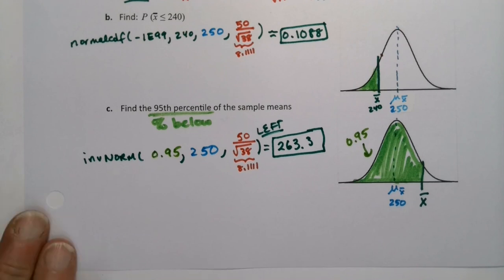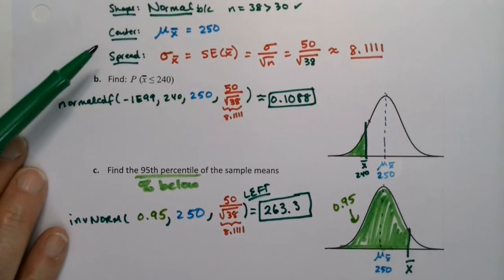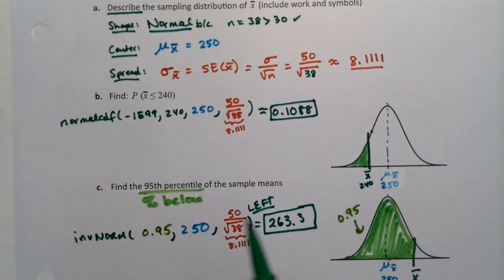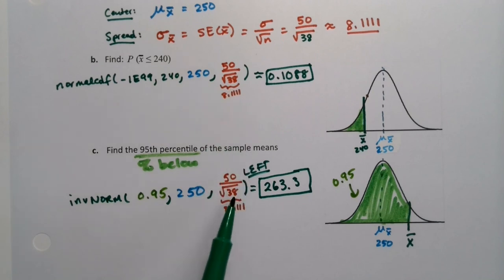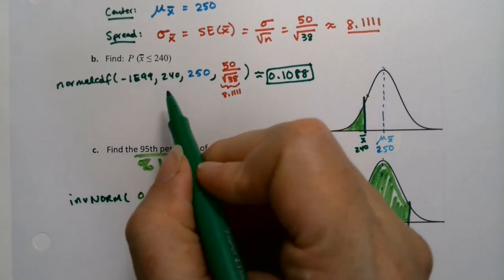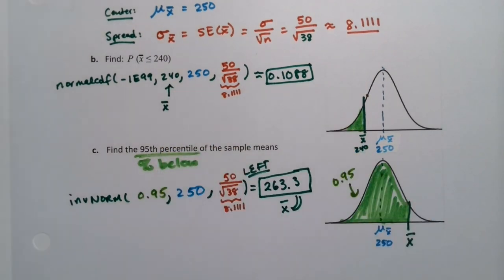So when we proved that these graphs are normal, in this case, because n is larger than 30, that means that all of the properties and calculator and computer entries, StatCrunch entries that we had for normal curves still work. But they're slightly modified because they use the standard error rather than standard deviation. And you're finding x-bars. This is an x-bar. It's not an x value. And 240 is an x-bar, not an x value. But other than that, it's pretty much the same thing that you were doing in chapter seven.